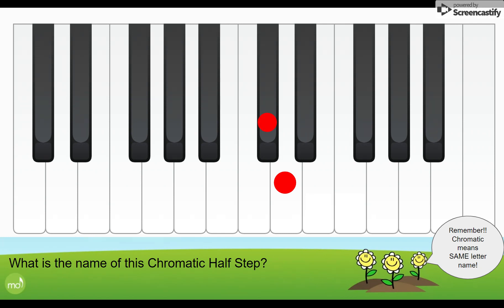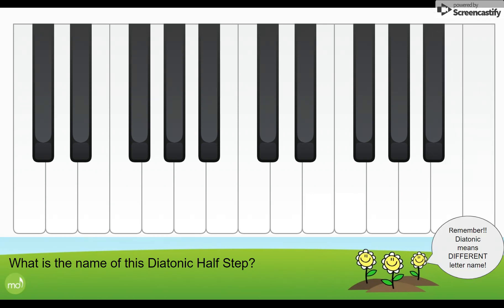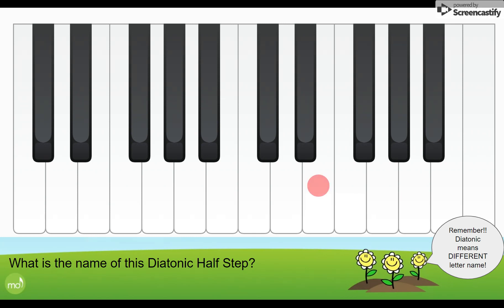How about this one — D to the very next key below is D flat. Now in our next section, let's talk about diatonic half steps. Remember, a diatonic half step will have a different name. Here we're going from a white key to another white key — that's B to C, which is a half step. Let's look at this next diatonic half step going from E to the next white key, F — also a half step.